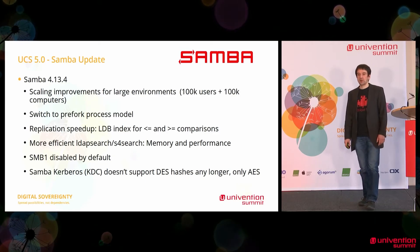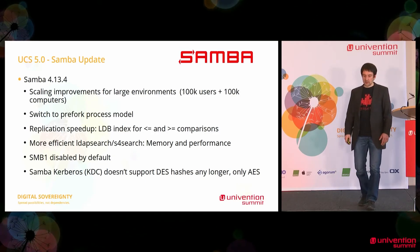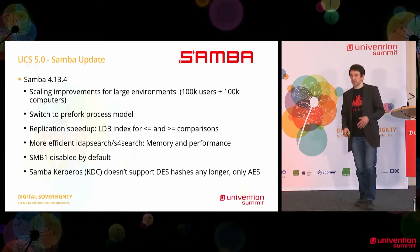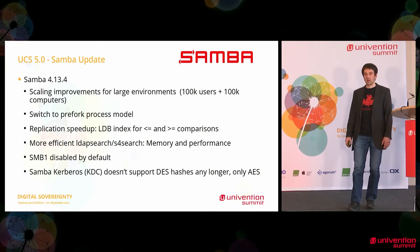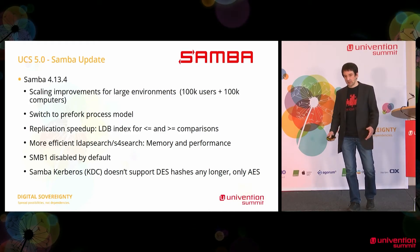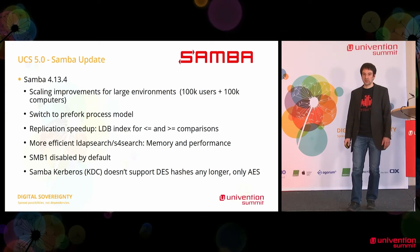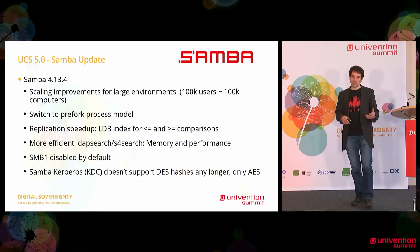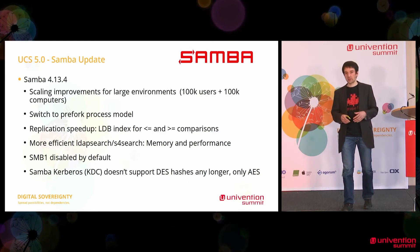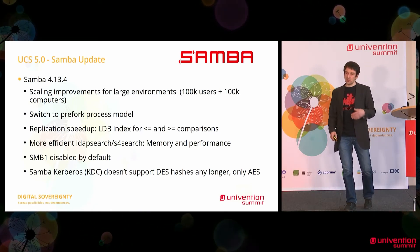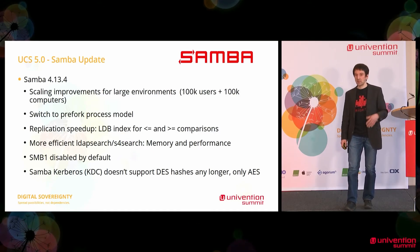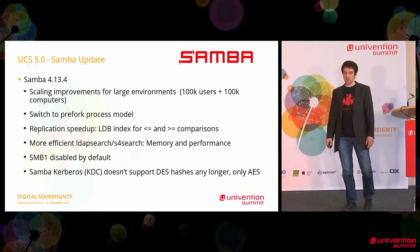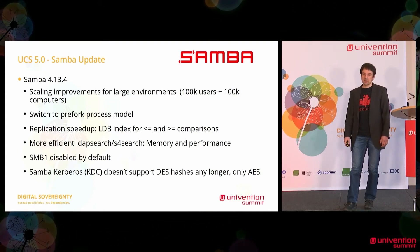Samba switches to a pre-forked process model that is familiar from the Apache web server. The RPC call is faster because a process doesn't have to be spawned, which is relatively expensive. Also, the replication between Samba DCs and the LDAP search is more efficient — this is made possible by enabling less-than-or-equal-to and greater-than-or-equal-to comparisons, so you can make easy comparisons. Memory requirements for LDAP search have been significantly reduced.